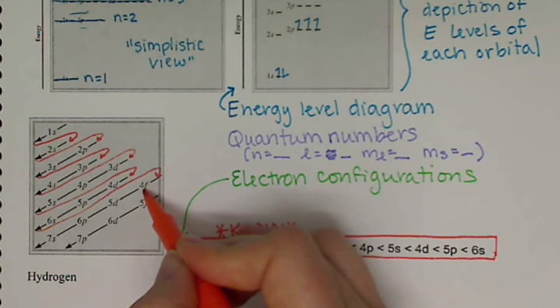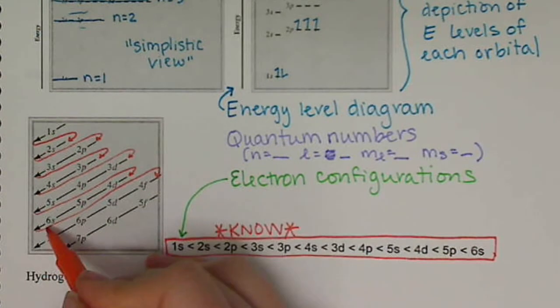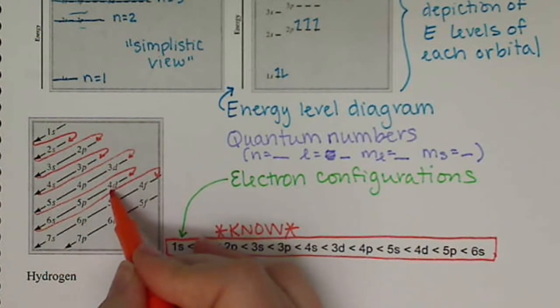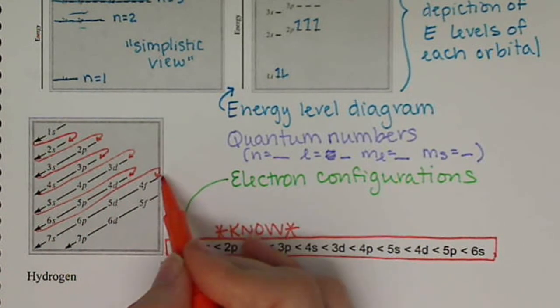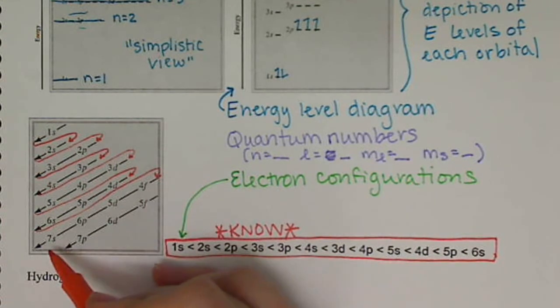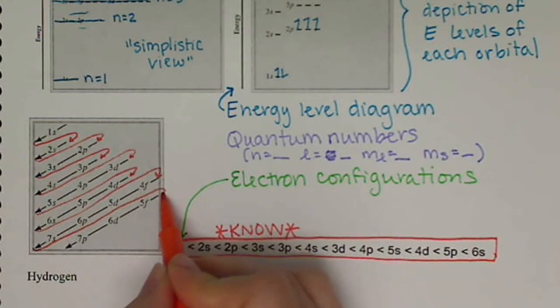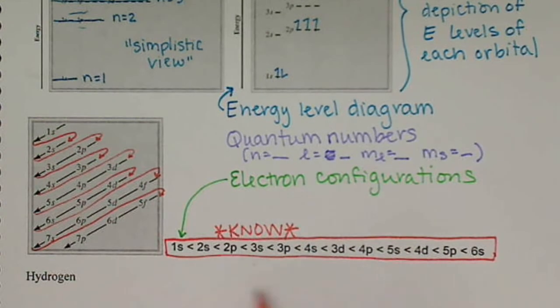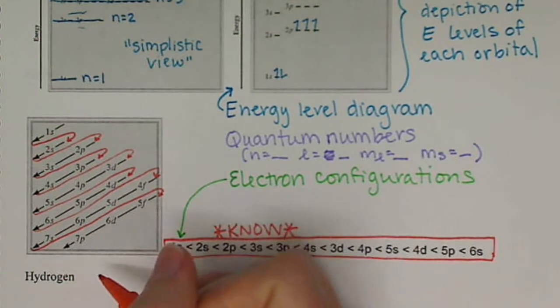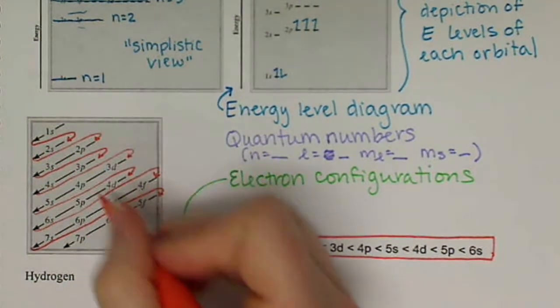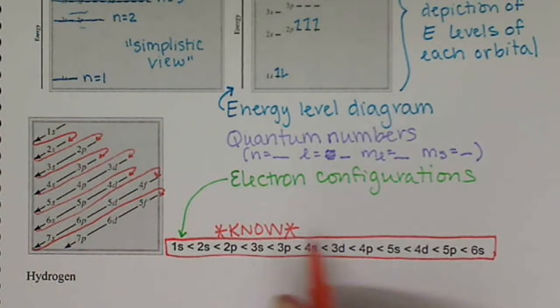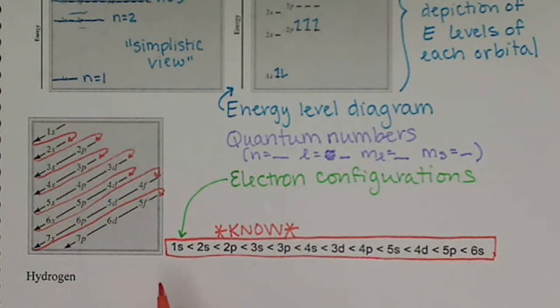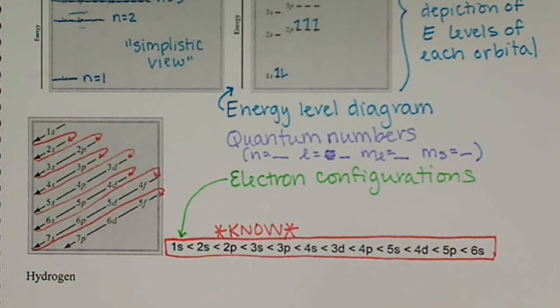And then we have 4f is actually higher in energy than the 6s, the 5p, or the 4d. So that's a way, in case you forget this, or you're not as familiar with this by the time the exam comes, you can generate this list. And at the end of these lectures, I will show you a trick of how you can use the periodic table to figure these out.